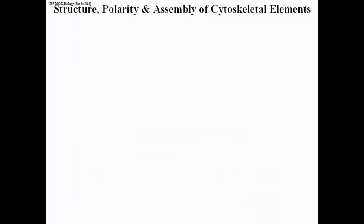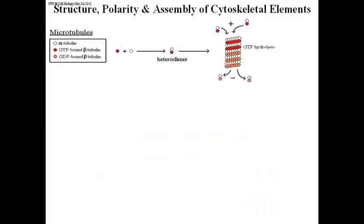Let's look at the structure, the polarity and the assembly of cytoskeletal elements. Here we have microtubules. Microtubules are built from tubulin monomers and we see here that one of the monomers, the beta tubulin monomer, actually binds GTP.